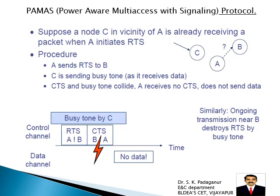The second contention-based protocol is PAMAS — power-aware multi-access with signaling. It provides a detailed overhearing avoidance mechanism, though it does not consider the idle listening problem. The protocol combines a Buzitone solution and RTS handshake similar to the MACA protocol. It has two channels: a data channel and a control channel.